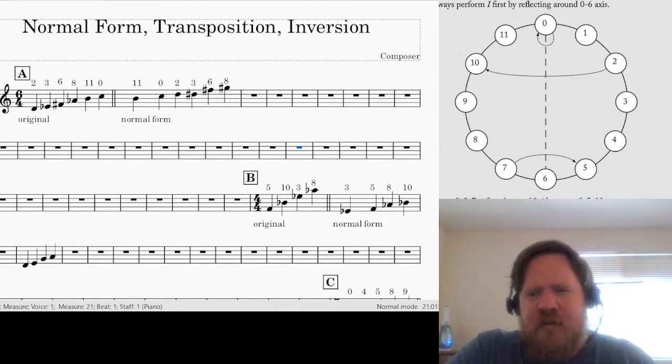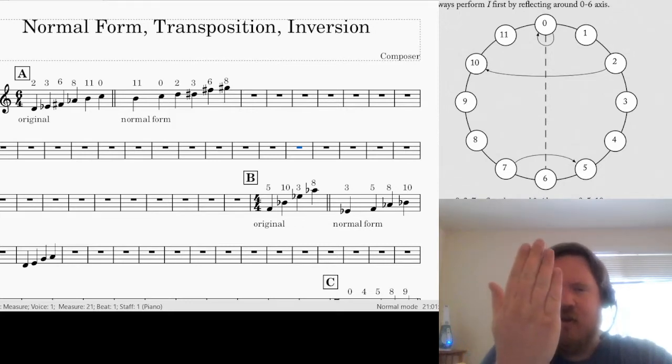A good way to visualize it is this clock face right here. Here's 0, here's our C, all the way up to B. So if we have our E-flat right here, we want to find the inversion of the E-flat. We're going to invert it around this axis from 0 to 6, which means we take the clock face and flip it around like that. So 3 is going to become 9.